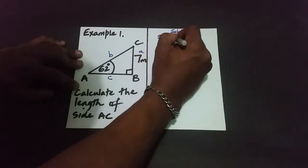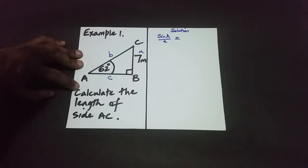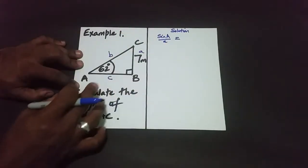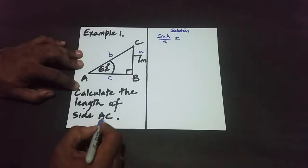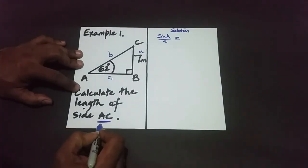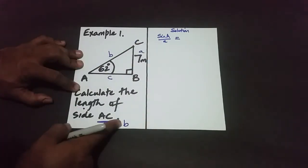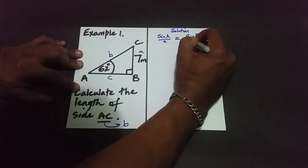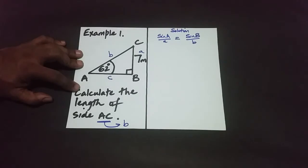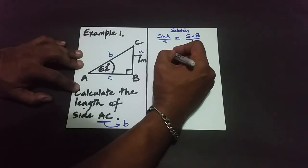The full pair gives us sin A over little a. The next pair depends on what we're asked to find. We're asked to find AC, and AC is also little b. So we are forced to use sin B over little b. We could not use the pair involving C, as that would not make sense here. This is how you determine the correct two pairs.